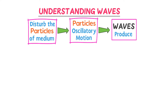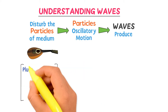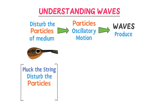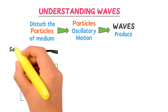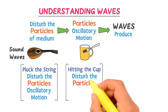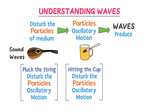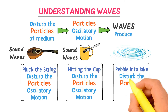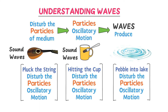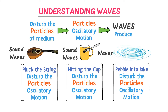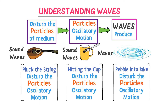For example, consider a guitar. When you pluck the string of the guitar, you disturb the particles of the string from the mean position; these particles start oscillating about their mean position and sound waves are produced. Similarly, hitting a cup constantly disturbs and sets the particles to oscillate about their mean position, producing sound waves. When you throw a pebble into a lake, the water particles start oscillatory motion and you observe waves across the lake.